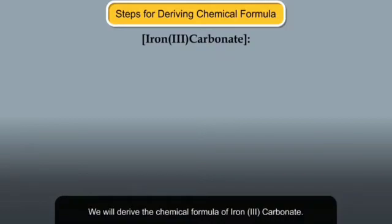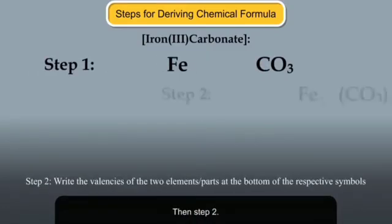We will derive the chemical formula of iron 3 carbonate. Let's apply each step one by one. Step 1. Then step 2.